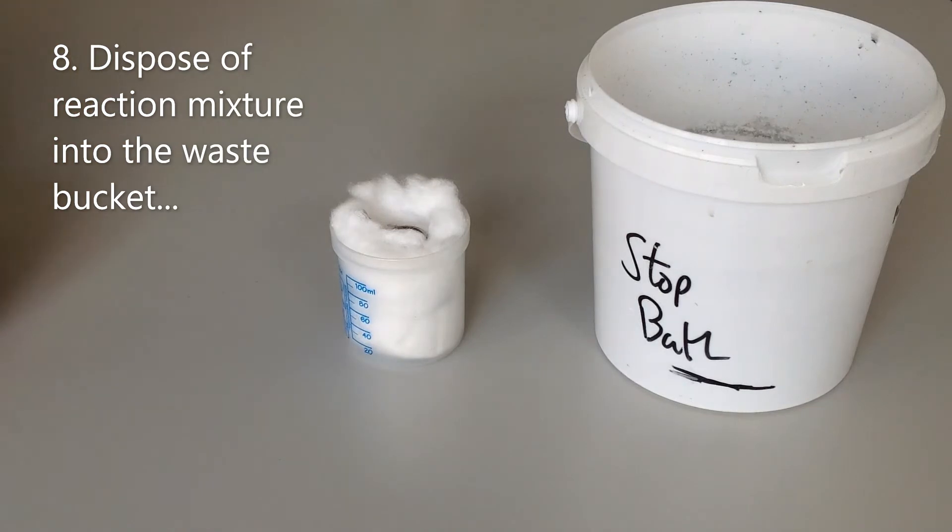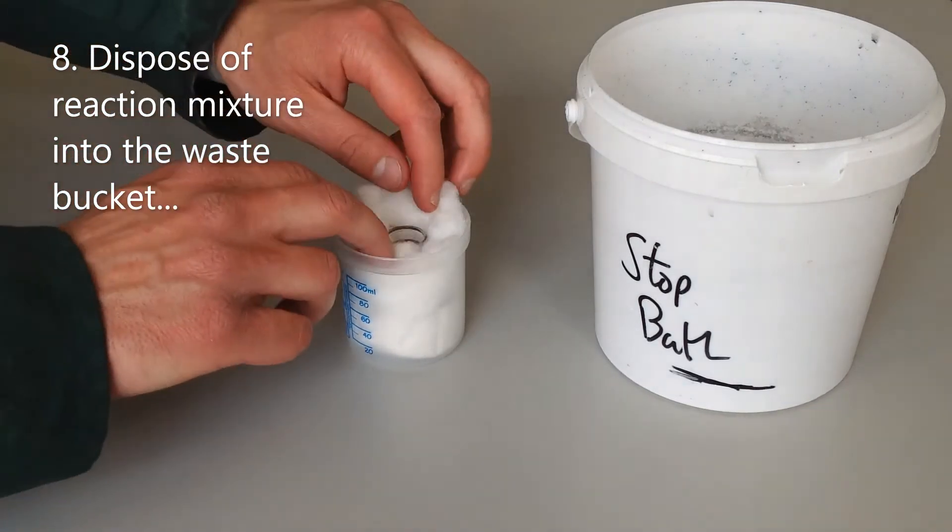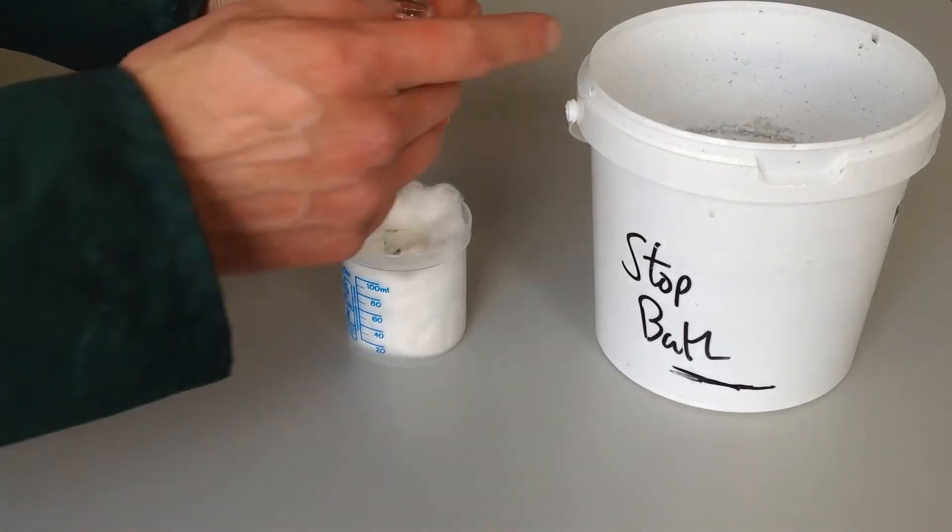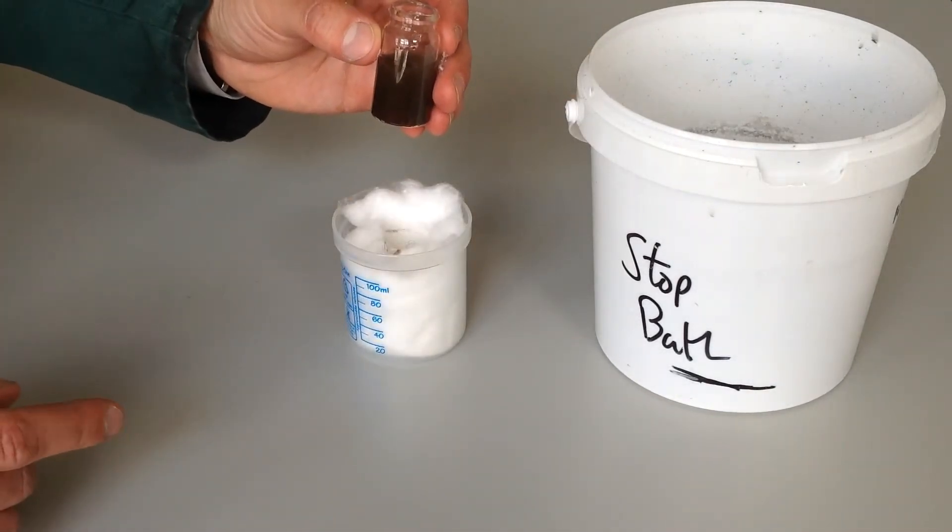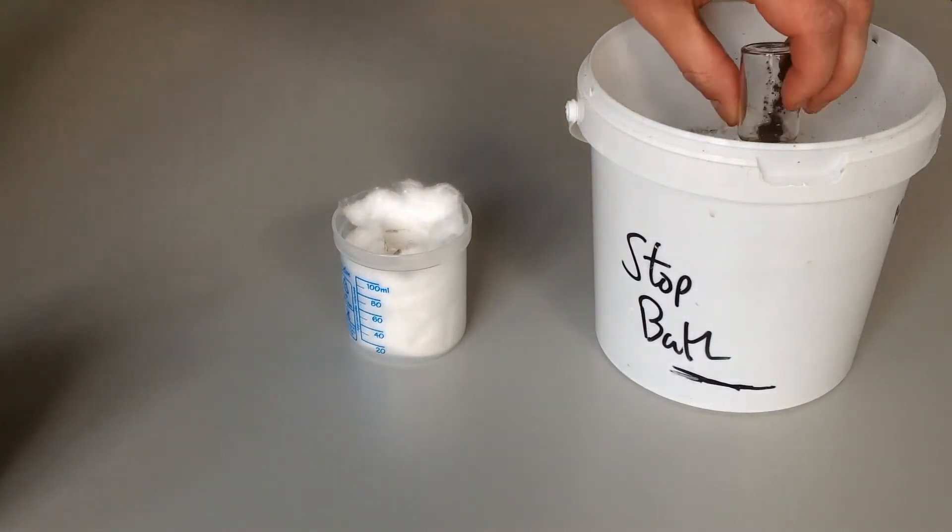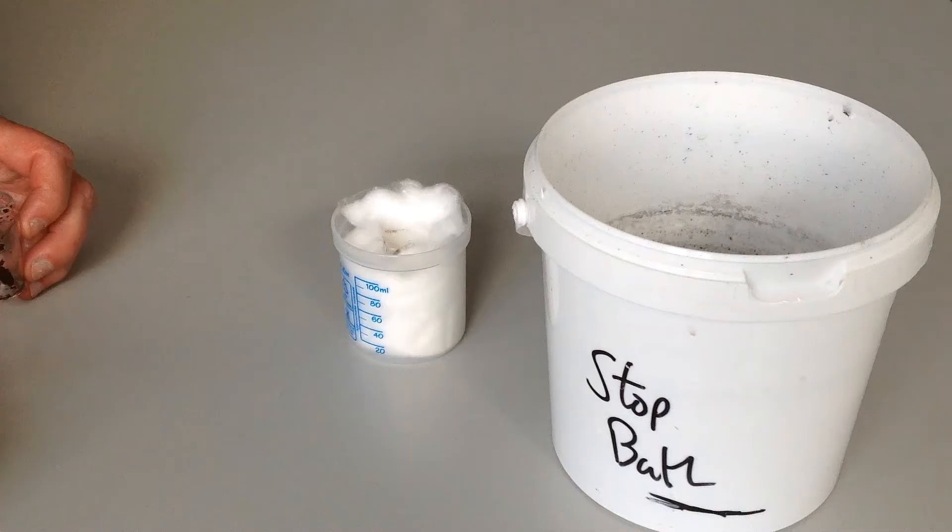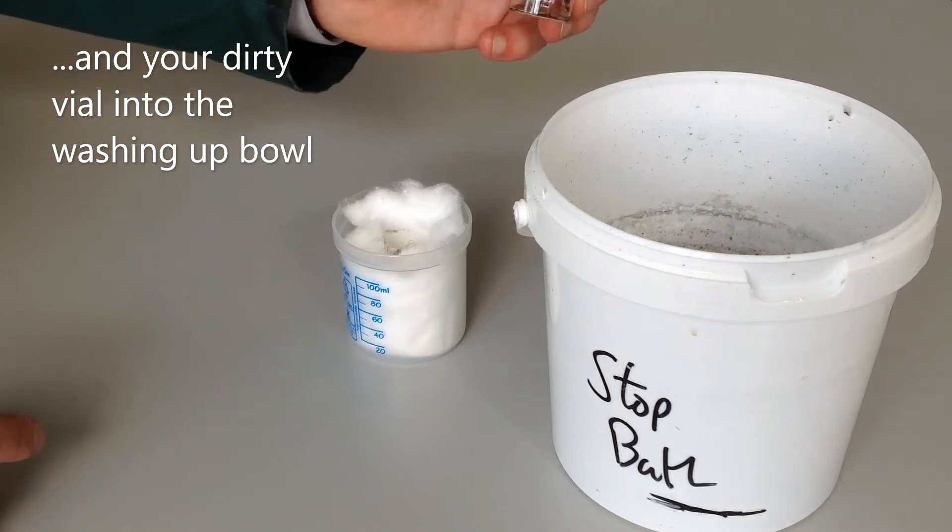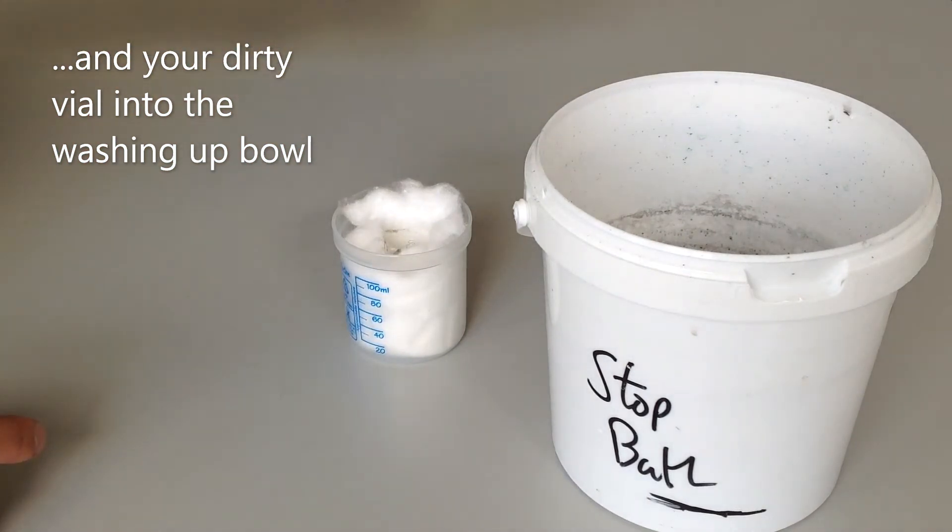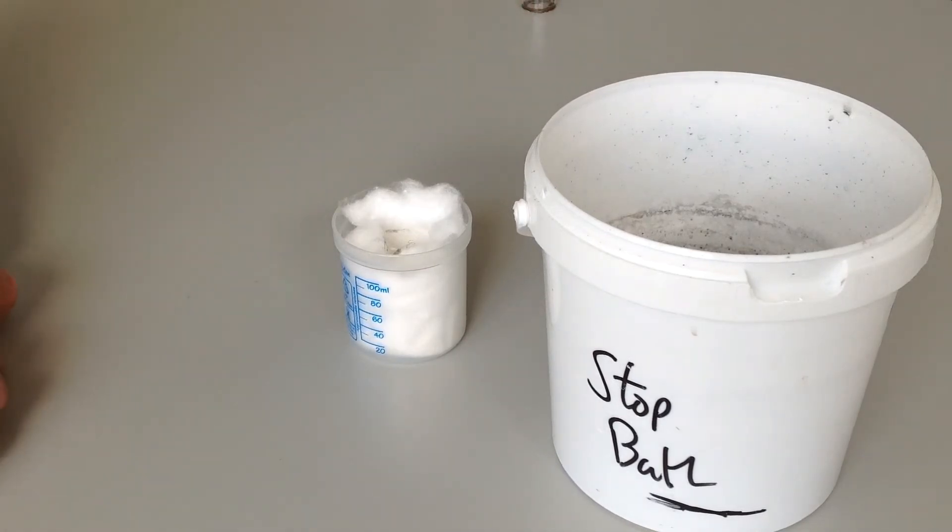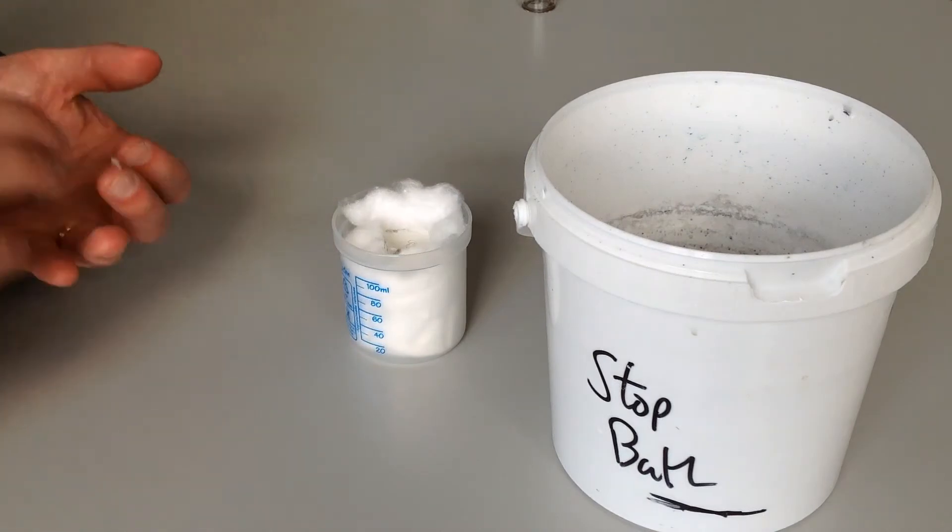Once you've got your final temperature reading, you should be able to just carefully push the lagging down, bring out the vial. You'll have a waste bucket on your bench. It looks a bit like this. I'm just going to pour your whole mixture through there. Once you've put your reaction mixture into your waste bucket, you're going to then put your vial into the washing up bowl that's on your table, and then you'll be ready to start the next experiment. Before you do so, make sure you've recorded your initial and final temperatures.